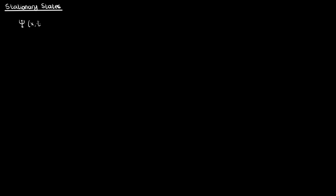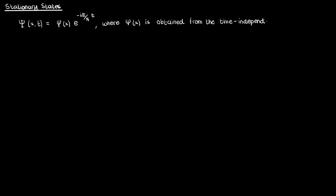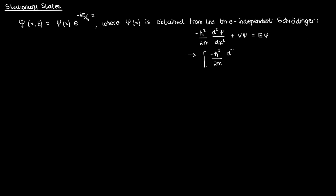Recall from the previous video that we came up with the following solution for the Schrödinger equation via separation of variables. We didn't know small psi of x because we still had to solve the time-independent Schrödinger equation. If you take the psi out of the entire expression on the left to obtain equation 1, you'll end up with this somewhat familiar looking operator that's operating on the psi.